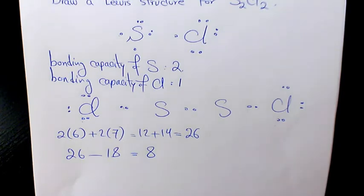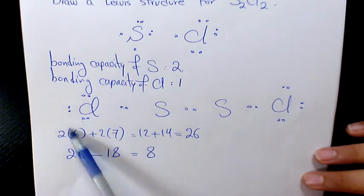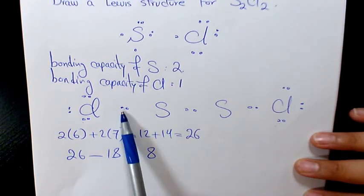Now we need to see if we have an octet for these elements. Chlorine: two, four, six, eight—that's good. Two, four, six, eight—that's good. But what about sulfur? We have two and two, four, two and two, four. So it's not a full octet.